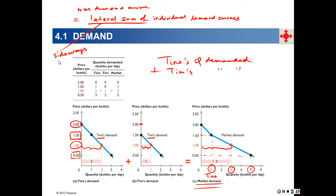This is how we get the market demand curve. From an individual demand curve, for every price we can predict the quantity demanded by that individual. From the market demand curve, for any price we can read off the quantity demanded by all consumers in the market combined — the market quantity demanded, which is the sum of all individual consumers' quantities demanded.